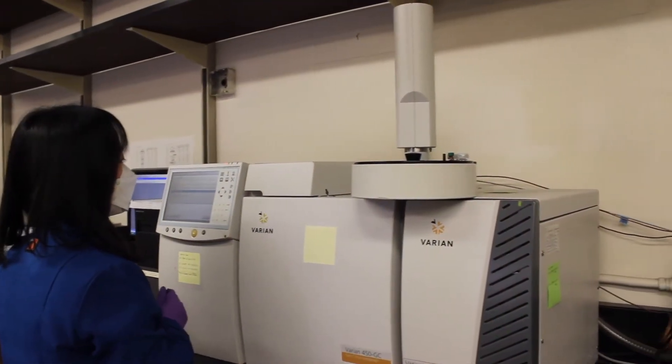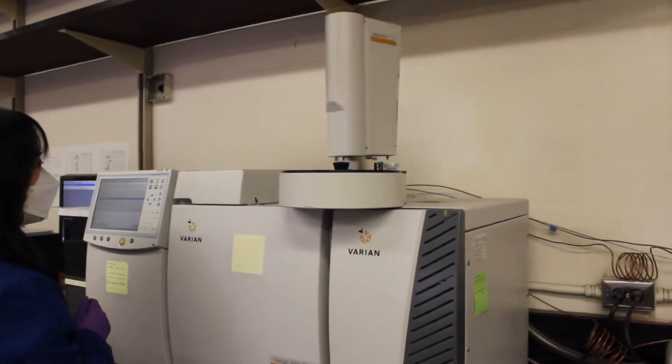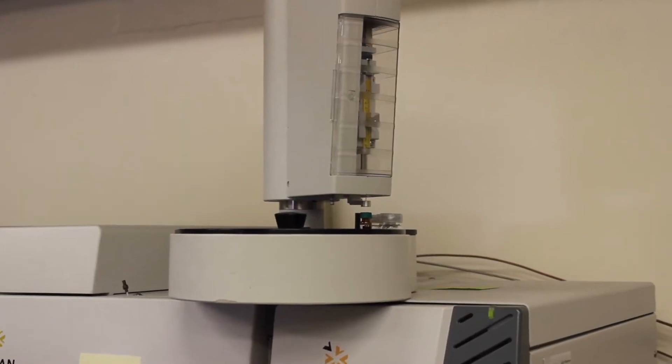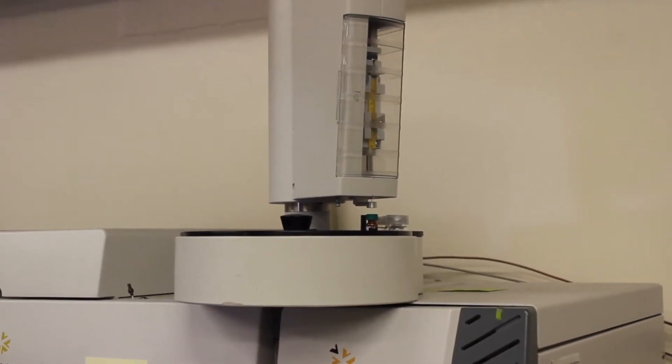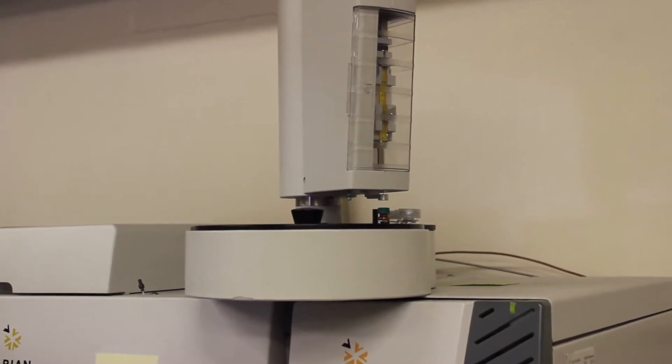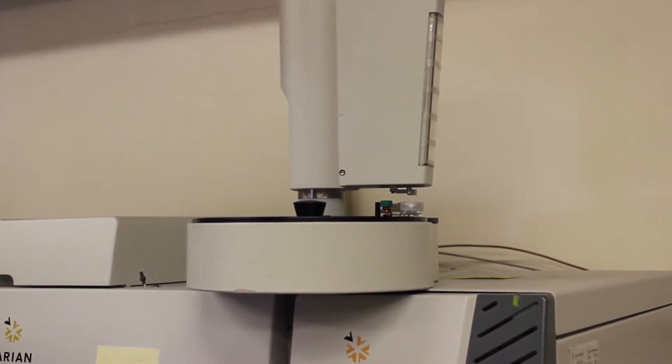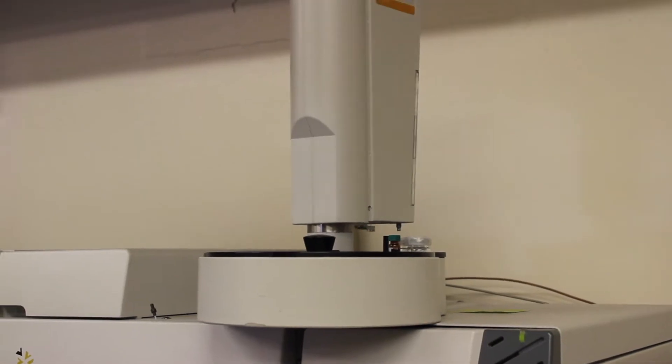This is the oldest instrument in our lab. It's a gas chromatography with a flame ionization detector and an ion-trap mass spectrometry detector. We've been using this for purity analyses of edible oils such as fatty acids and sterols since 2010.